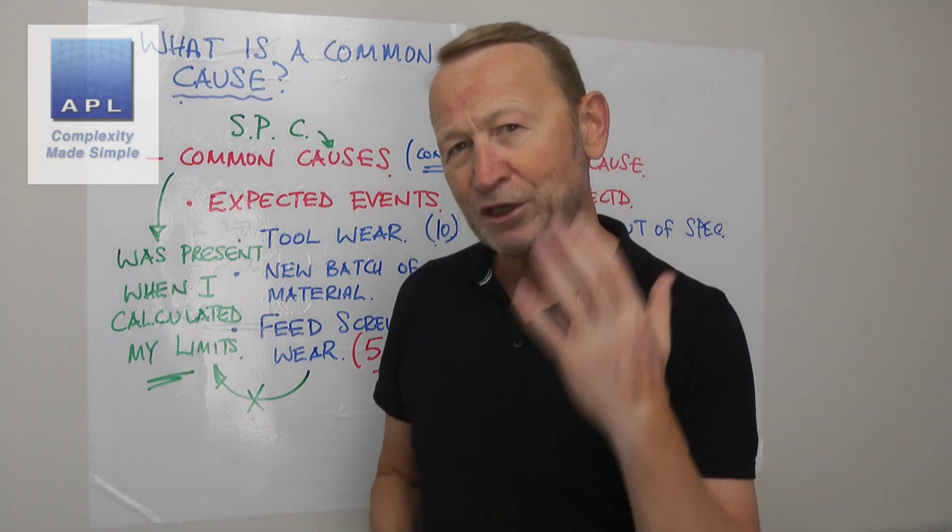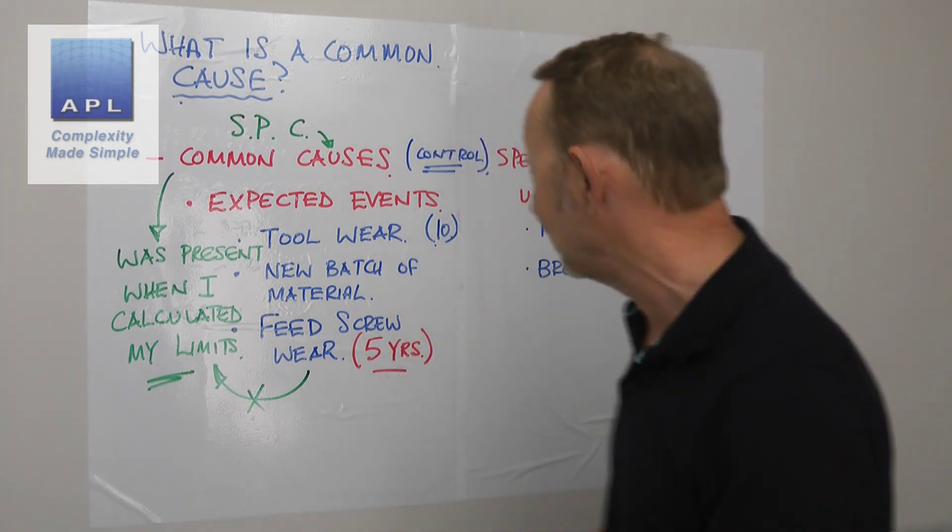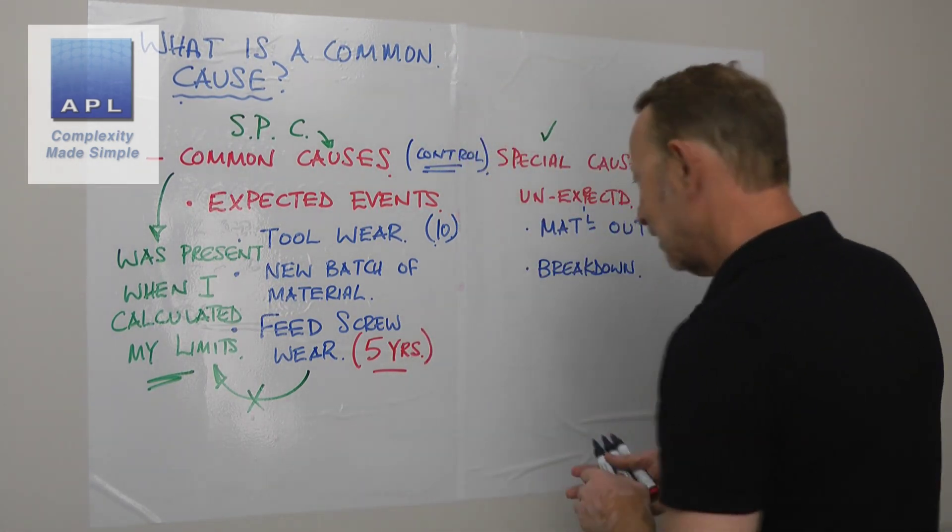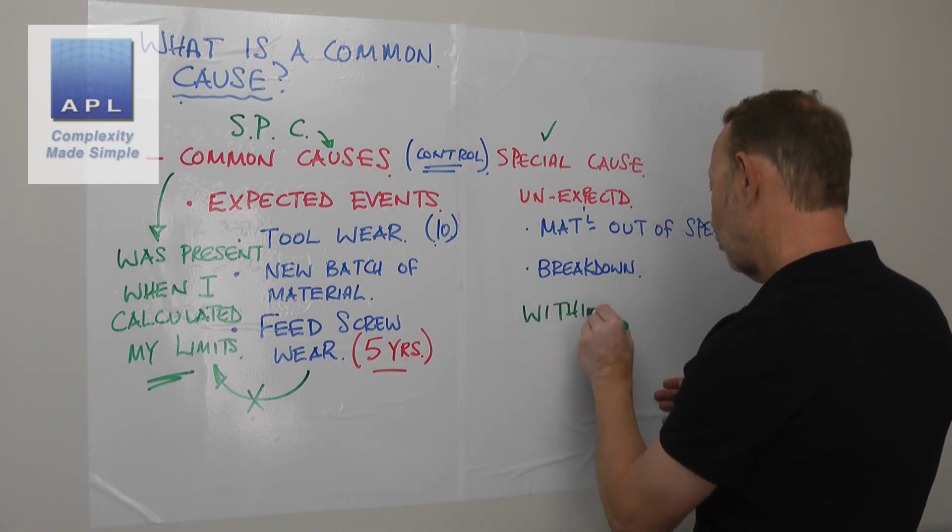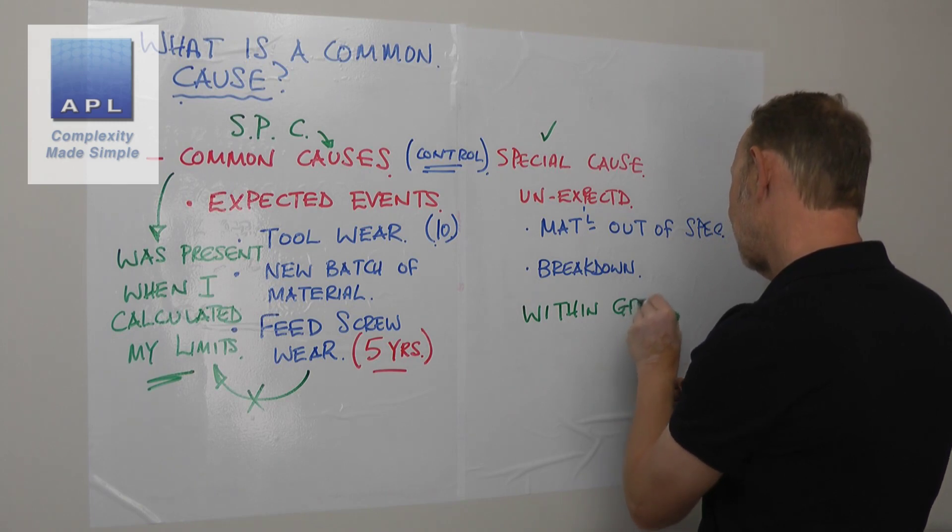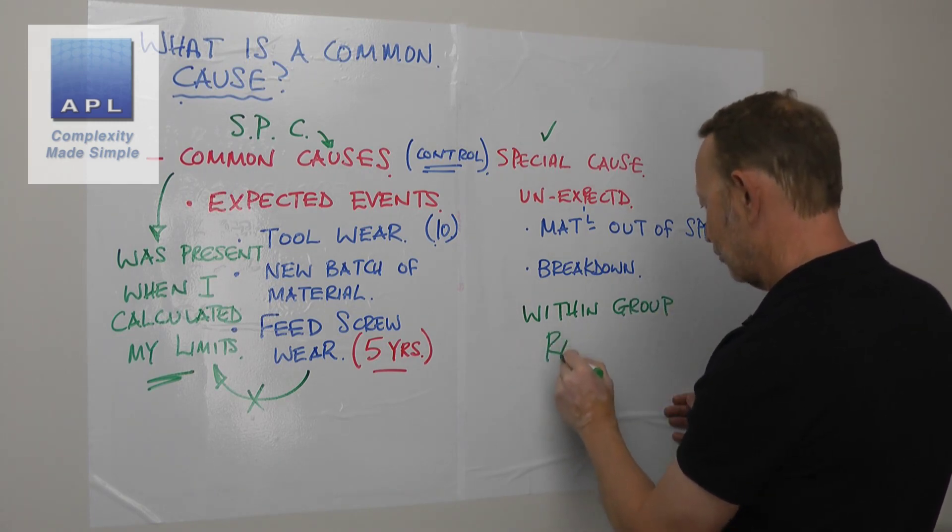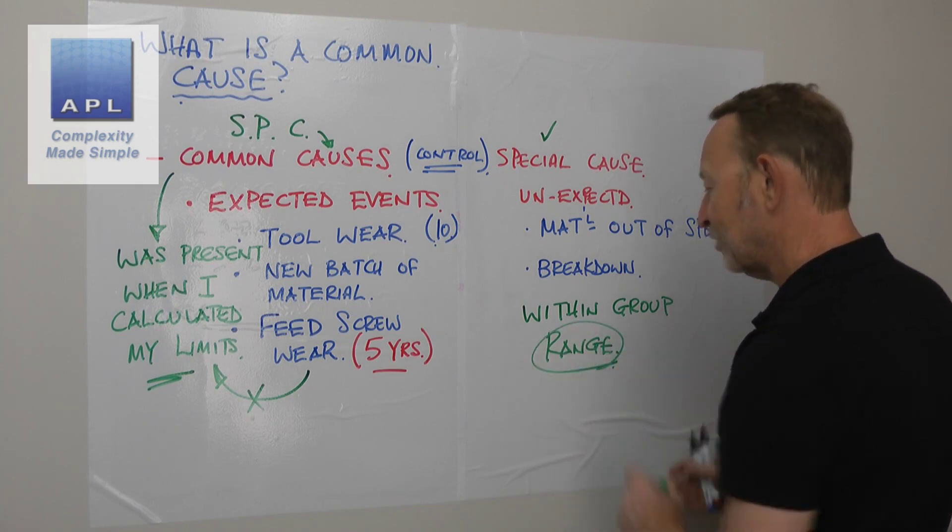Now because of the way Shewhart gets you to calculate your control limits, the way he does it of course is by using within a group the variability. He uses the range within group to make this calculation.